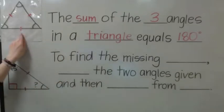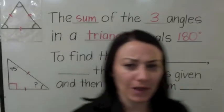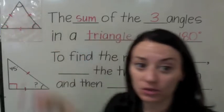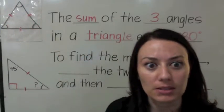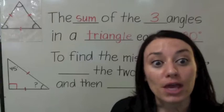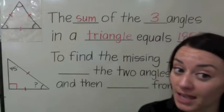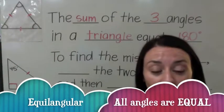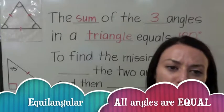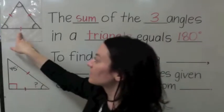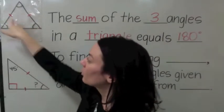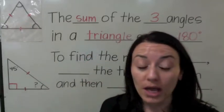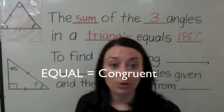What kind of triangle has all equal angles and all equal sides? If we look at its angles, we call it equal angular, which means all the angles are equal. If we look at its sides, these little congruency marks mean all the sides are equal. Another word for equal is congruent.